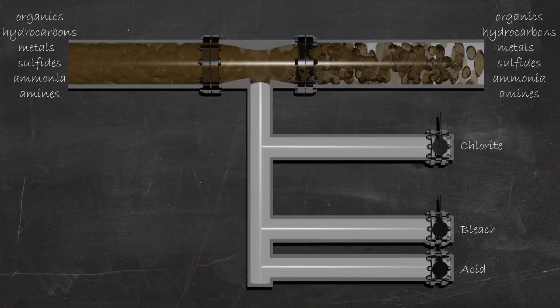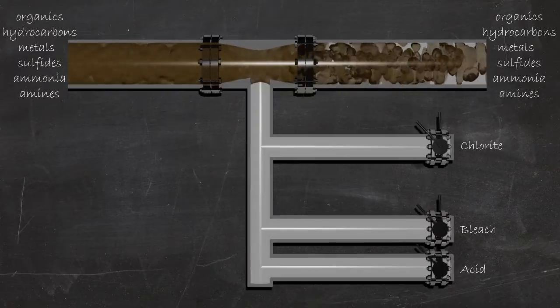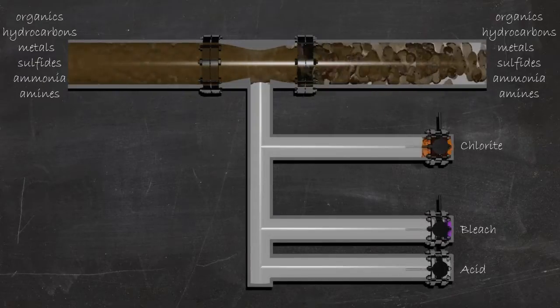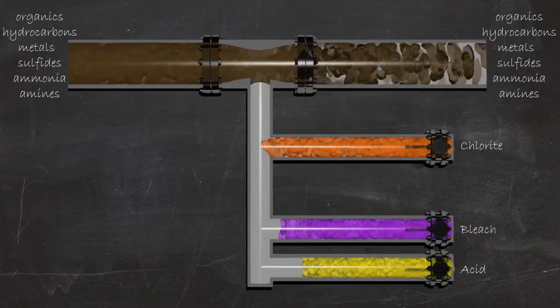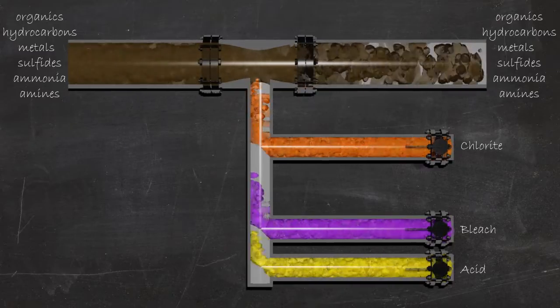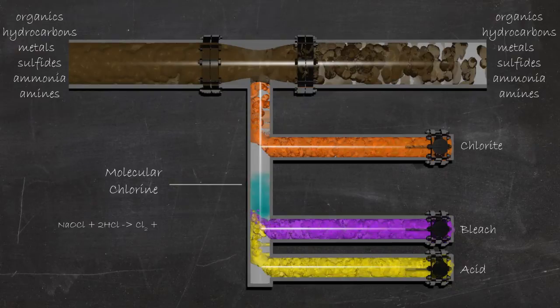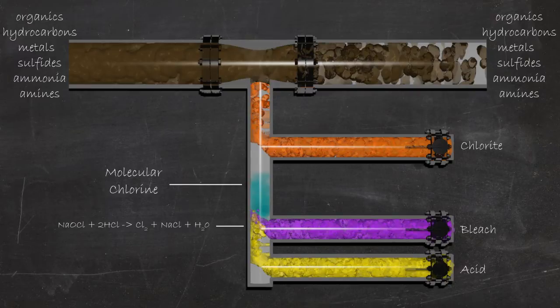At the bottom of the reactor, sodium hypochlorite and hydrochloric acid are brought together through rapid and intimate contact to form molecular Chlorine. A mixture of Chlorine gas and water vapor is formed in the bottom section of the reactor. Less than 2 grams of Chlorine gas is present in the reactor at any time.